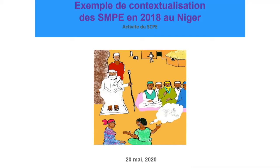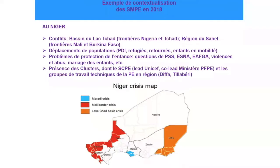My name is Muriel Palares and I work with UNICEF. I will present the process of contextualizing the 2012 minimum standards for child protection to the Niger context. I worked on this process with the coordinator of the child protection sub-cluster. Our colleague who has been here for about a year, Emmanuel Haug, will also be able to participate and speak about future perspectives.